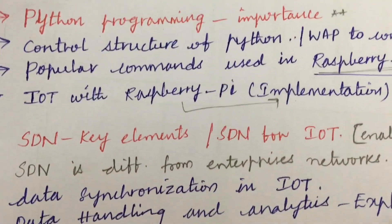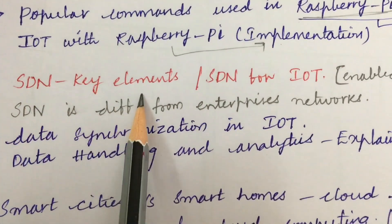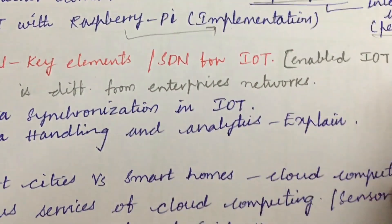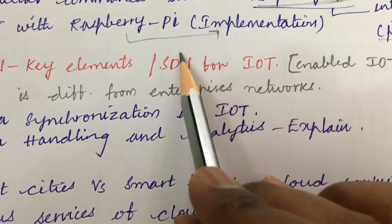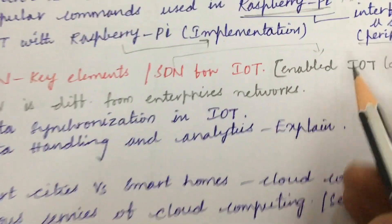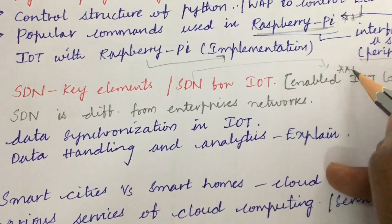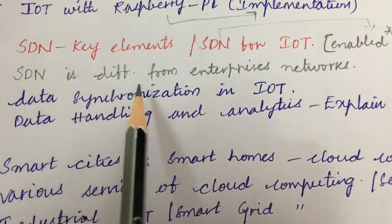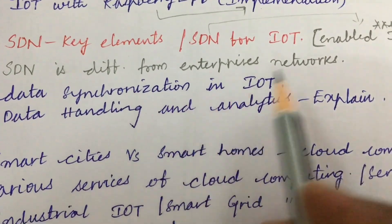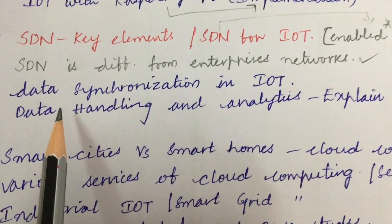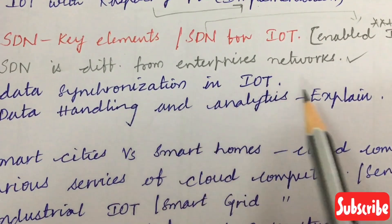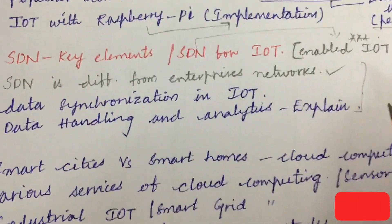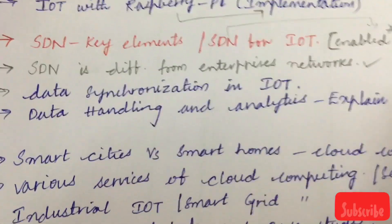Carry your stationery to the exam. SDN key elements, as well as the SDN-enabled IoT diagram, are very important gunshot questions from the fourth unit — for the sixth and seventh questions. SDN differs from enterprise networks — explain — as well as what is data synchronization in IoT and data handling and analytics. From this part you will get one question for sure.